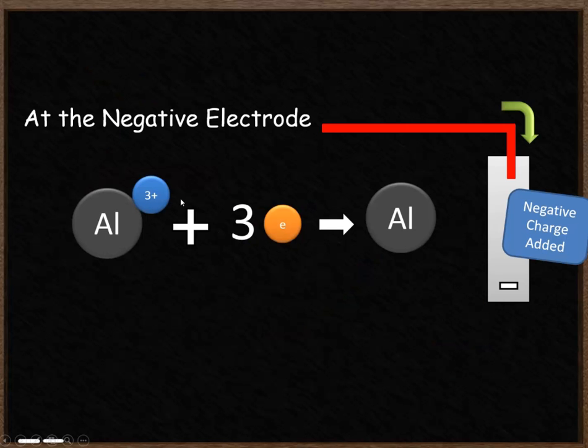So at the negative electrode, your aluminium is going to be attracted. It's going to gain three electrons to become aluminium. If you're asked to write a formula for what happens at the negative electrode, you'd write, just as above, Al3+ gets three electrons added and becomes aluminium.